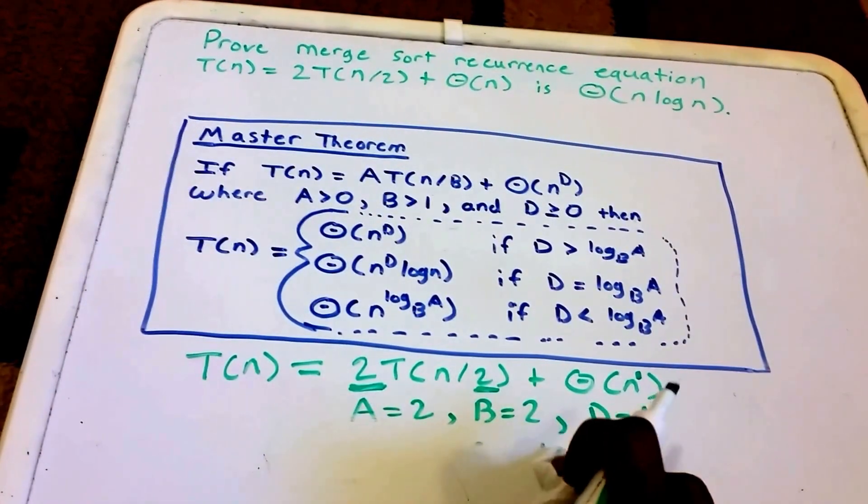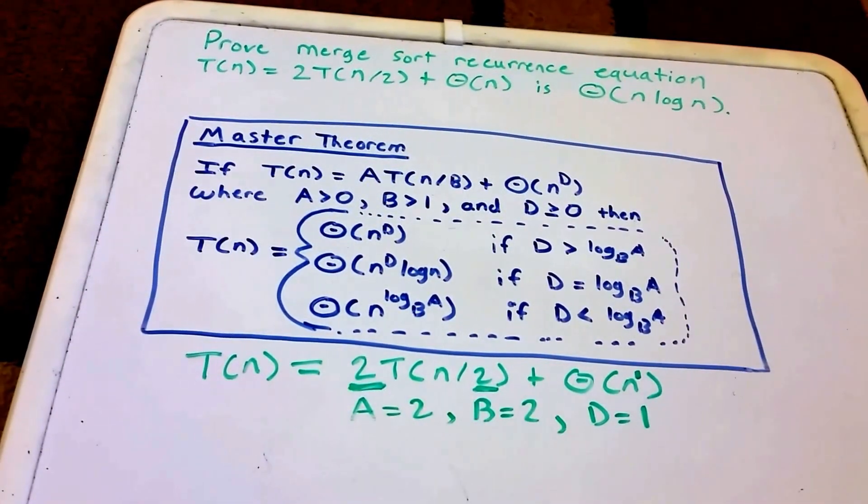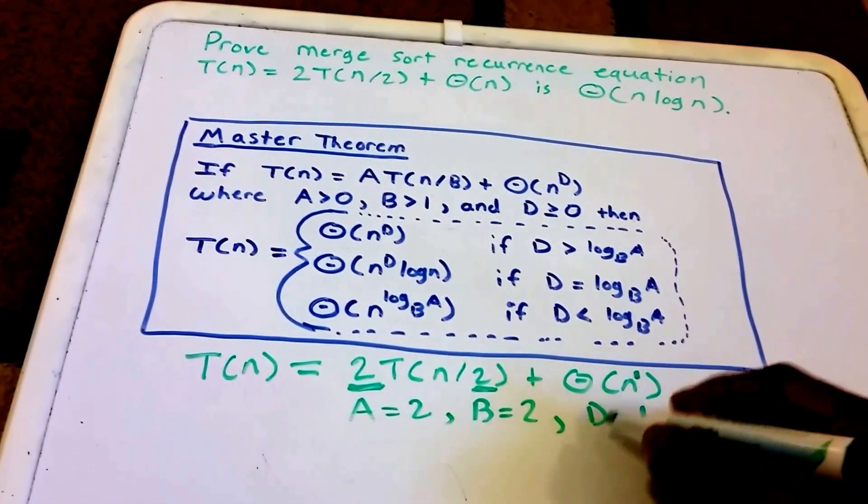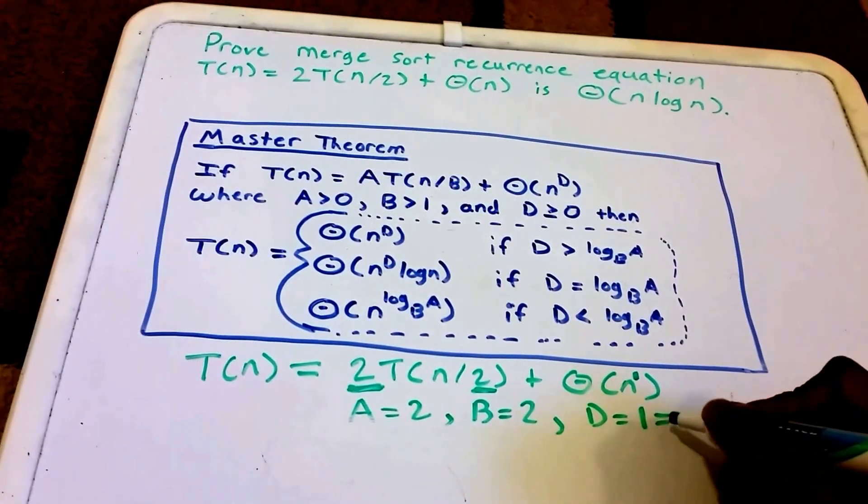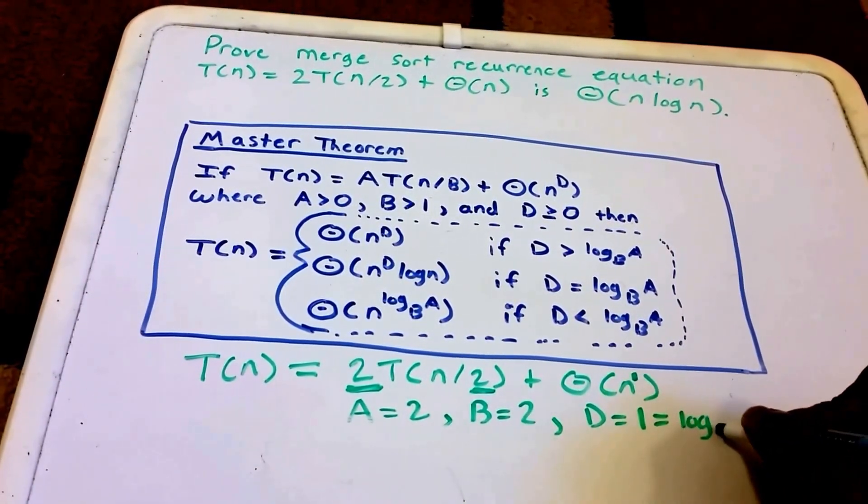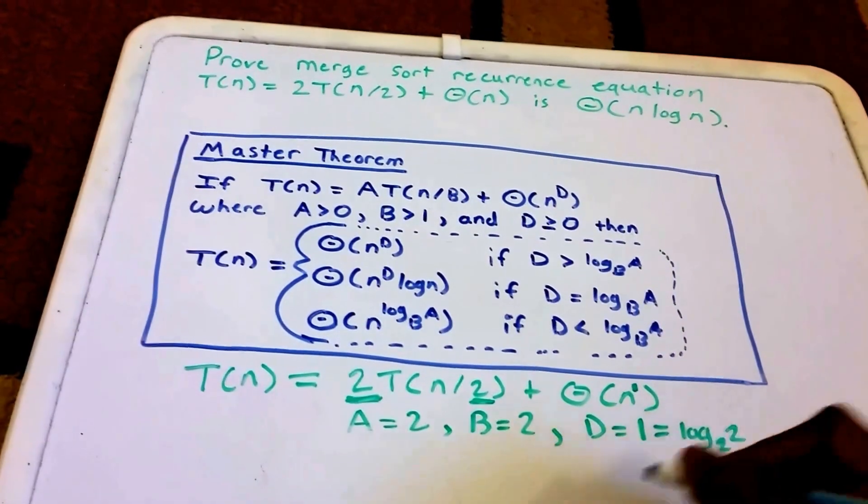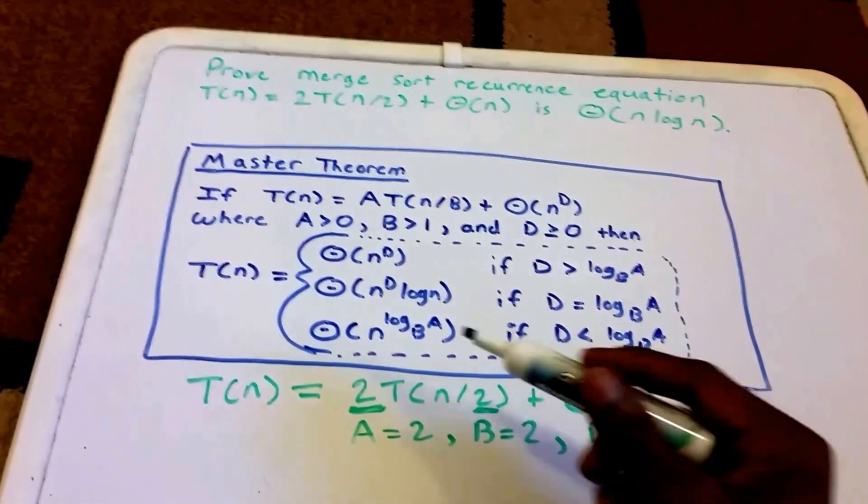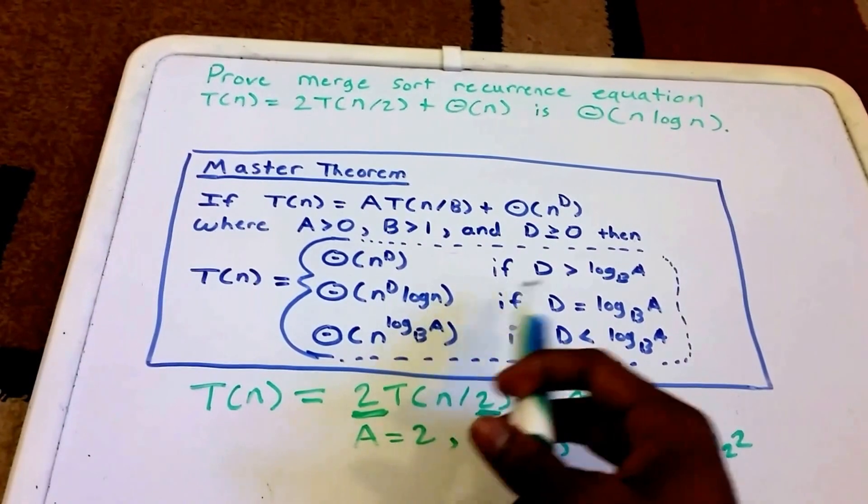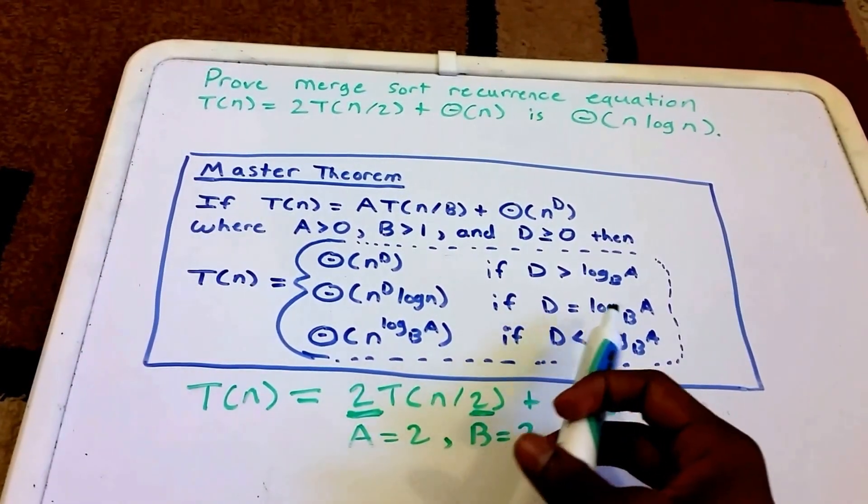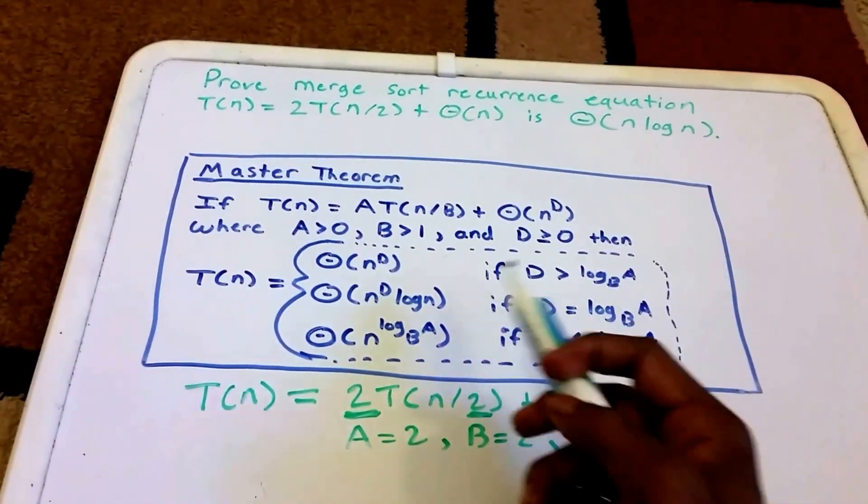That just so I have a little bit more room. So that means D = 1, which is also equal to our log base 2 of 2. So they're equal, so we look for the case where D = log_B(A), which is here, and this tells us that our recurrence T(n) = Θ(n^D log n).